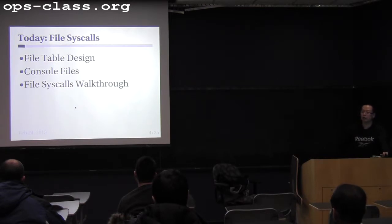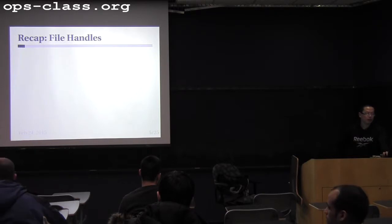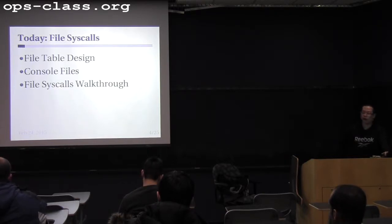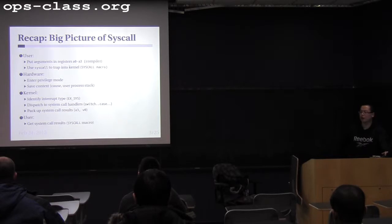Today we'll mostly focus on file syscalls. We'll first discuss the file table design, then discuss a special file which is the console, and then work through some of the file syscalls. Before we go on, any questions about this syscall big picture? I assume most of you have a pretty good understanding of this, since you were supposed to discuss it in the design document.